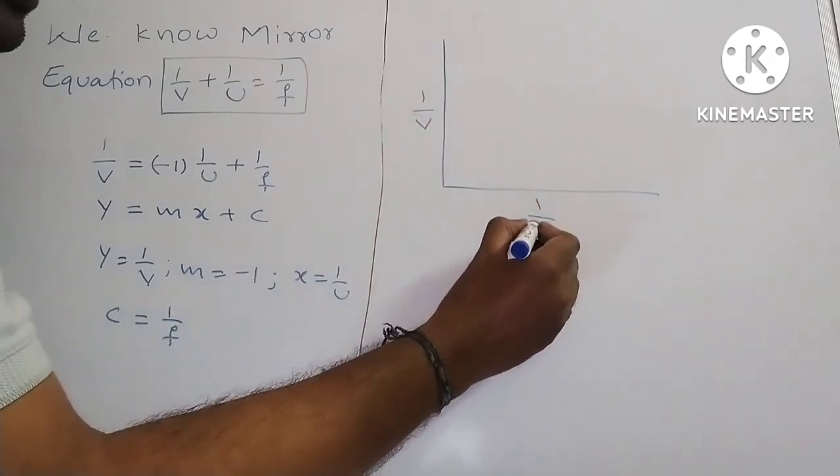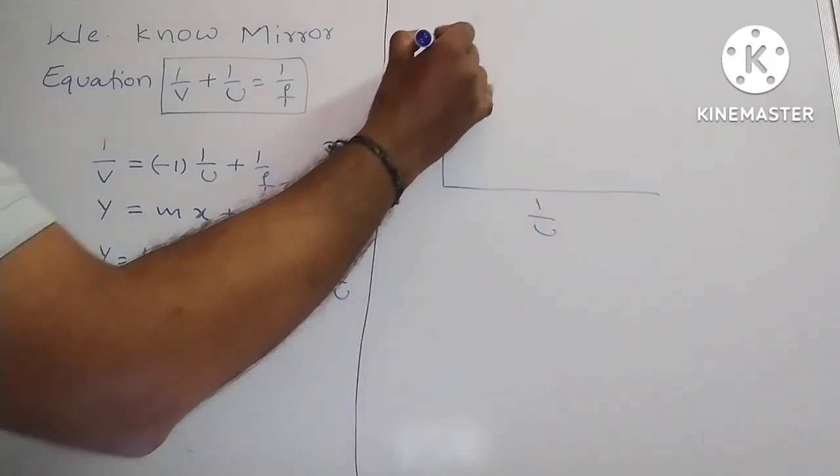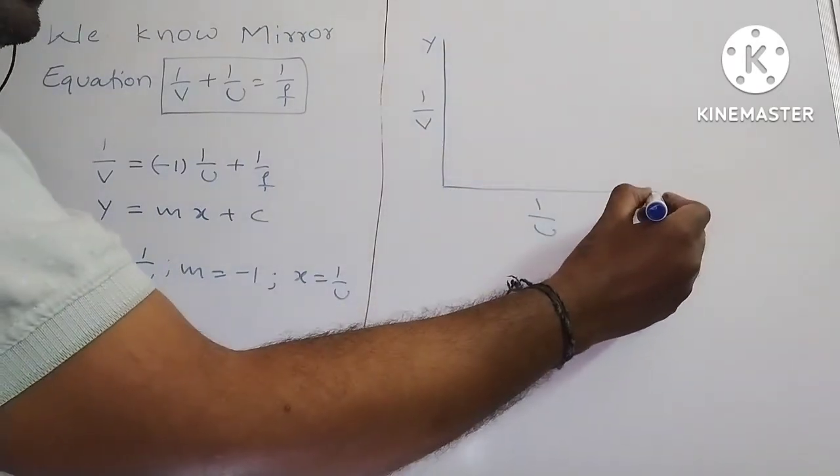1 by v and 1 by u. 1 by v, I am taking y axis, 1 by u on x axis.